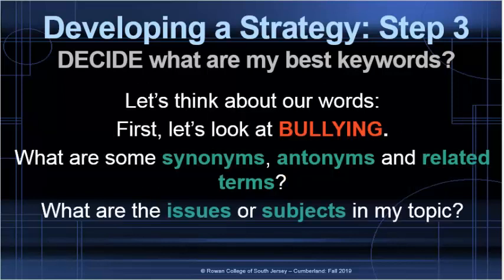Let's think a little bit more about our keywords, starting with bullying. We don't want to just have bullying on our list — we're going to want to think of synonyms, antonyms, and related terms to go along with it, because our first identified keyword might not be the best one to use in a search, so we need to have backups. A synonym is a word that means the same thing, an antonym is a word that means the opposite, and a related term is something that goes along with your topic or subject — it doesn't necessarily have to be a synonym, it's just related. We also want to think about the issues or subjects going on in your topic.